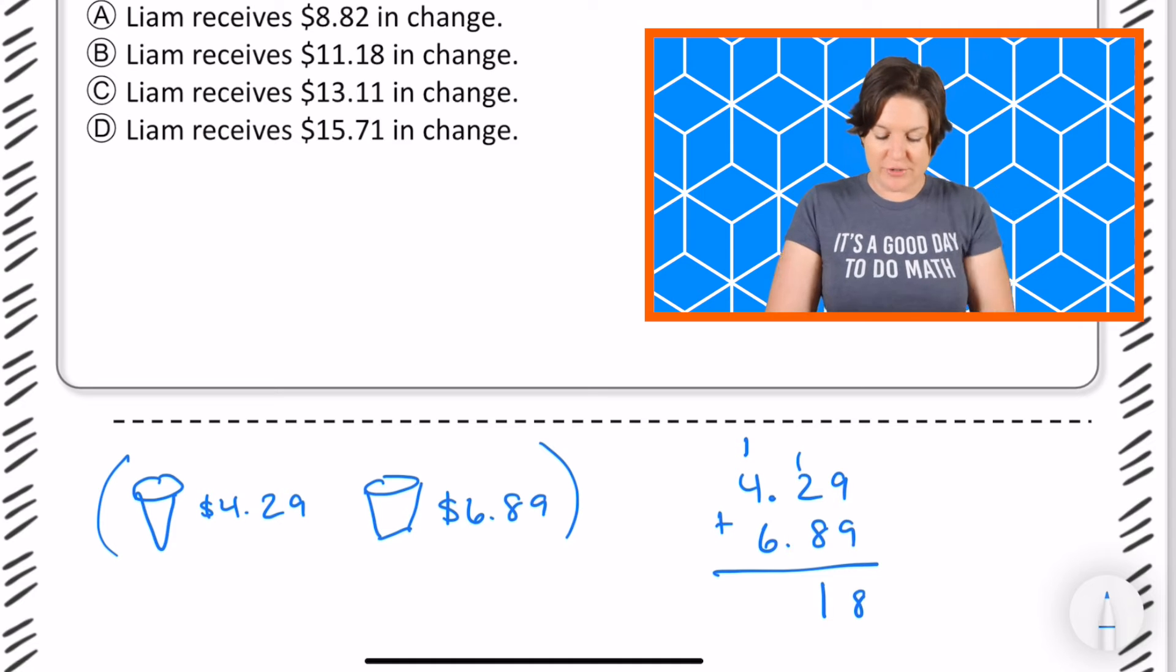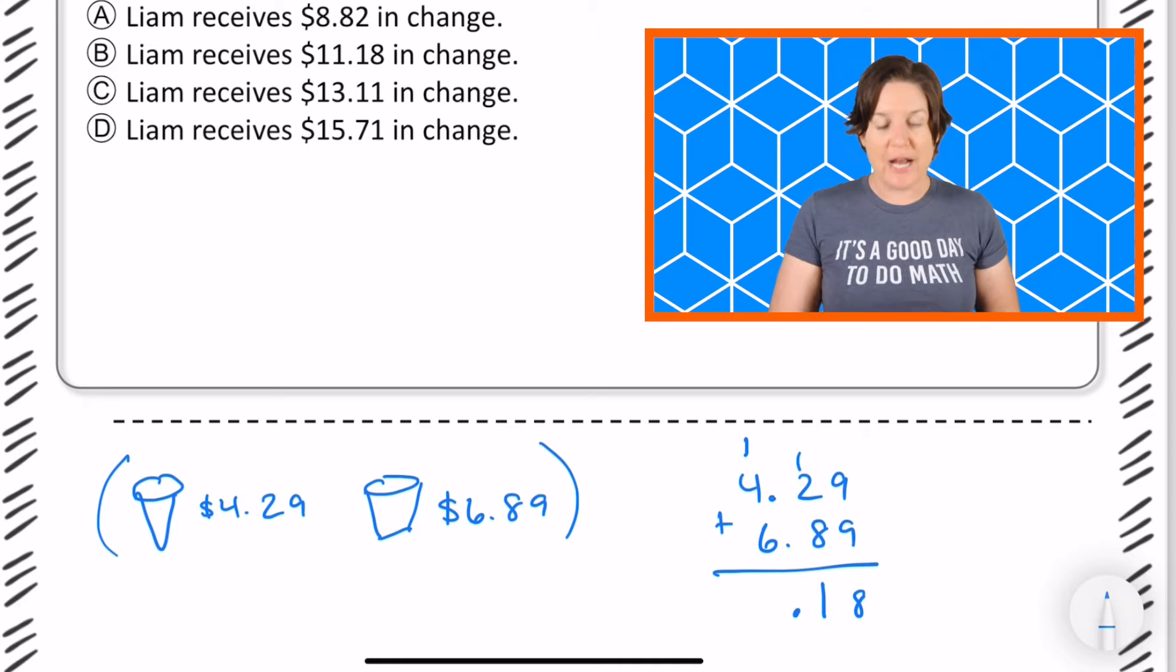Don't forget to drop down your decimal here. When we add or subtract with decimals we need to line them up and then drop our decimal down. And then we have six plus four equals ten plus one would be eleven.